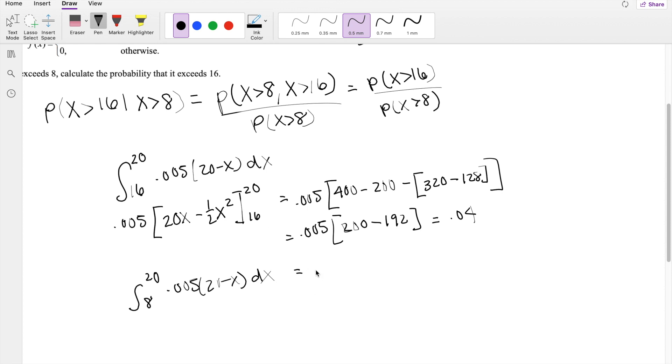So this is equal to 0.005, 200, minus, plug in the lower limits here. So that's going to be 20 times 8, minus 1 half, 8 squared. This is equal to 0.005, 200, minus 128. So this is equal to 0.36.